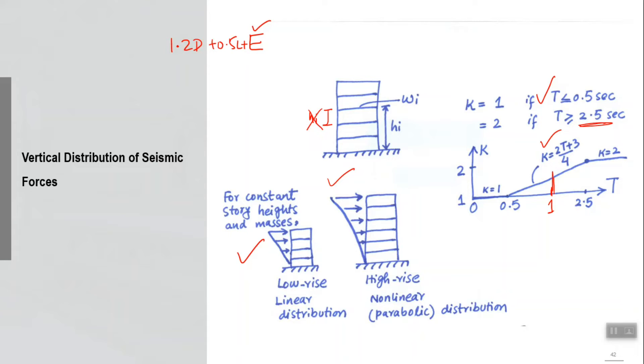If you have a load combination like 1.2 dead plus 0.5 live plus 1 earthquake, that E will be actually coming from the ELF load case or RSA load case or linear time history load case, whichever method you decide to apply. Any load case which you make to apply this loading pattern will produce the effect of moments and shears and everything which will be only this E, and that will be combined with the other load effects like dead, live, and other things in load combinations, and then you get a final design moment or design shear or design axial load.